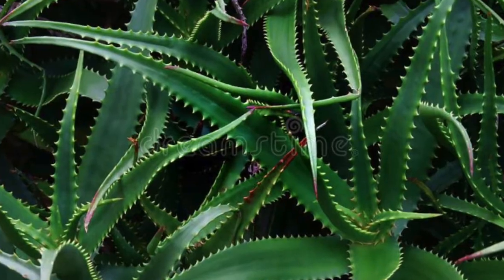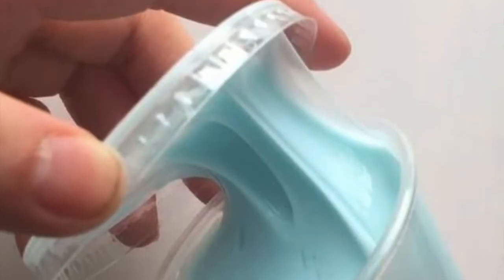Texture is the way something feels. Some examples of texture could be soft, rough, smooth, fuzzy, pokey, slimy, but there are a ton more than that.